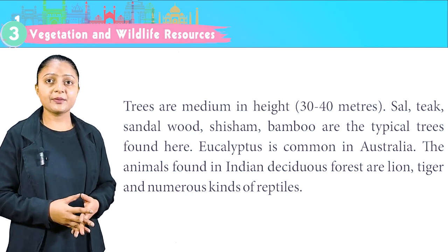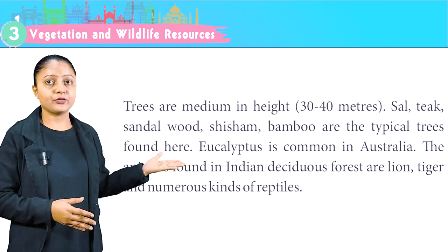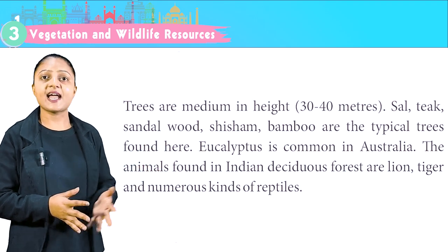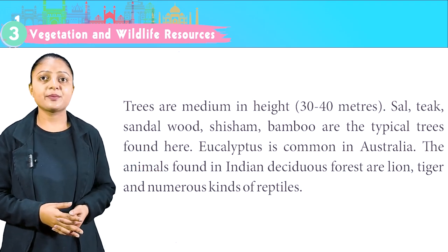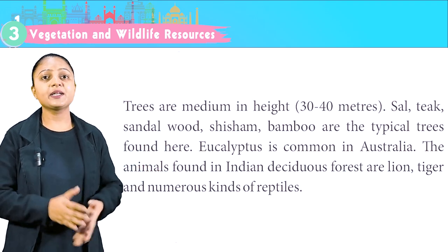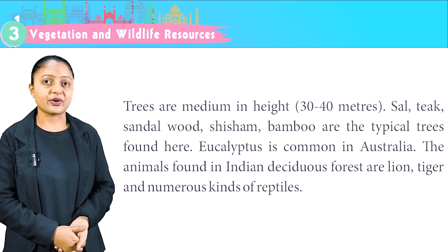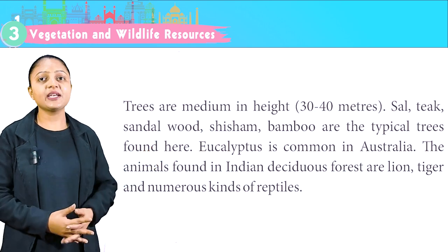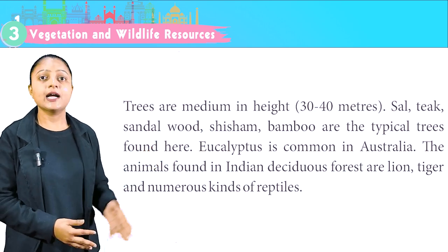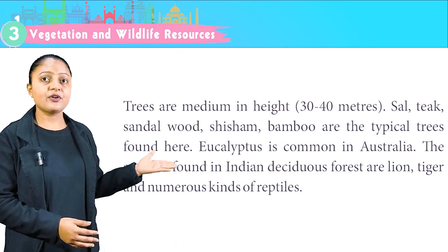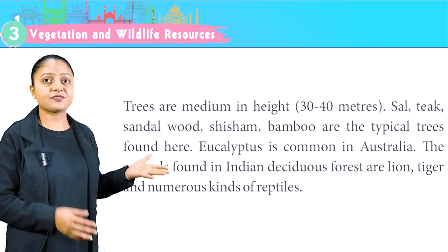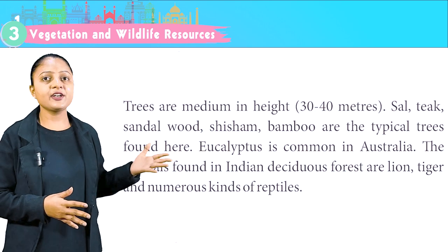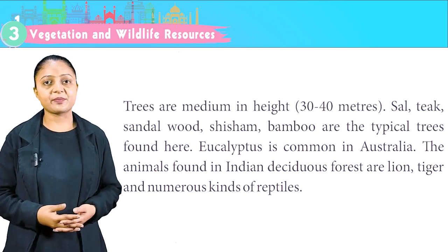Trees are medium in height — 30 to 40 meters. Sal, teak, sandalwood, shisham and bamboo are the typical trees found here. Eucalyptus is common in Australia. The animals found in Indian deciduous forests are lion, tiger and numerous kinds of reptiles.